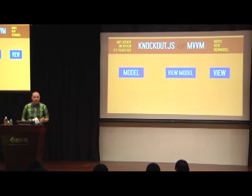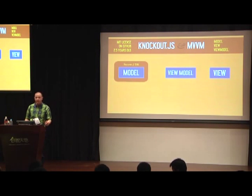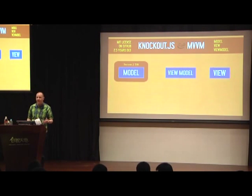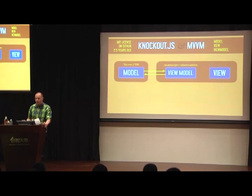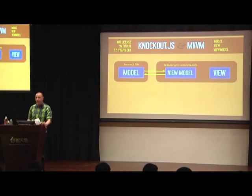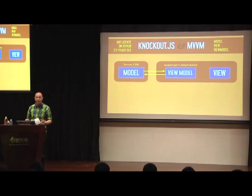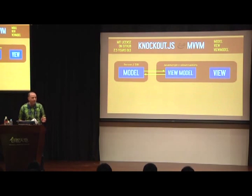What is model-view-viewmodel? In Knockout's view of the world, the model is the thing on your server — some server code that probably has a database. We don't care if it's Node, ASP.NET, or PHP; all we care about is that we can get data to and from it. What Knockout cares about is what's happening in the browser. Knockout enables you to create a view model — an object-oriented representation of what is happening inside your user interface. If you've got a list of things on screen, you probably have an array in your view model, and when you do something to your view model, that affects the user interface.